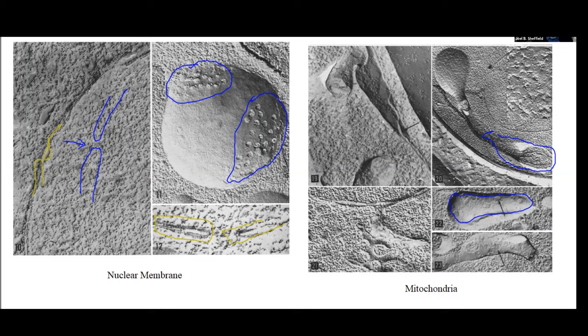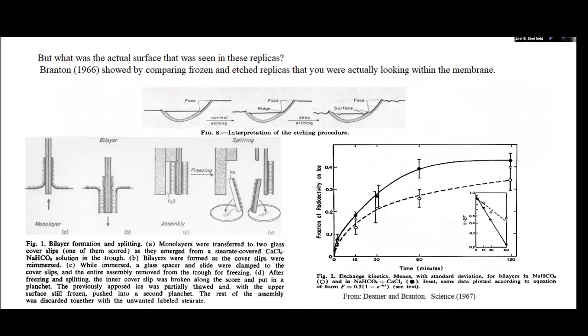But the question that started to emerge was, wait a minute, what are we really looking at? When we see these surfaces, what part of cellular structure are we seeing? Remember, this was all in the 1960s, late 1960s. There was not a comprehensive view of what membrane structure actually was.